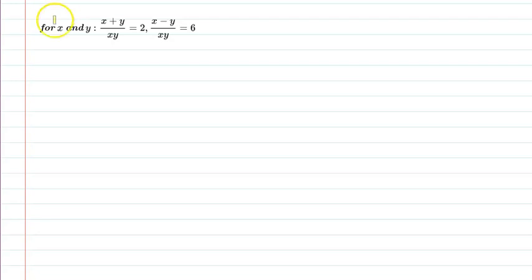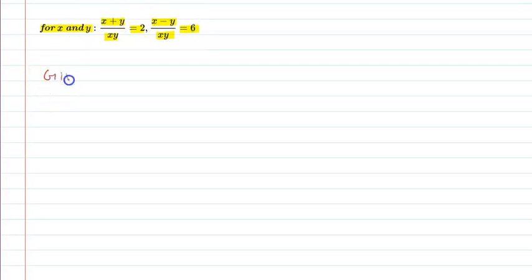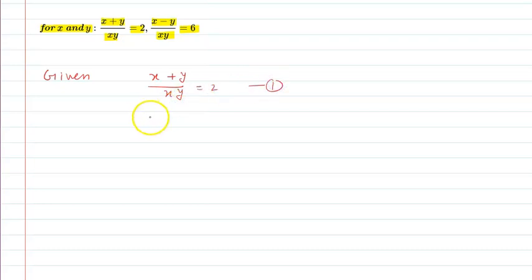Hello students, let us understand the following question. For x and y, x plus y upon xy is equal to 2, and x minus y upon xy is equal to 6. Let us see the given information in this question. We have two equations: equation number 1 is x plus y upon xy equals 2, and equation number 2 is x minus y upon xy equals 6.